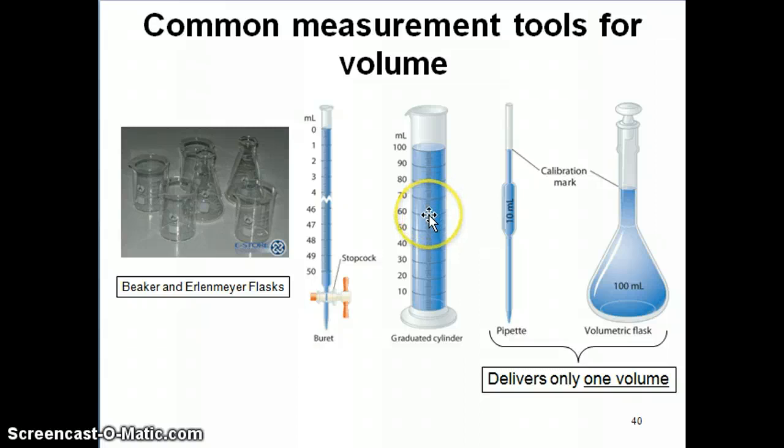The glasswares that you use to make precise measurements of volumes would be one of the following. You might use a burette. That's very precise. You might use a graduated cylinder. This is probably the one that's most commonly used. You might use some type of pipette or volumetric glassware. Volumetric pipette or volumetric flask.